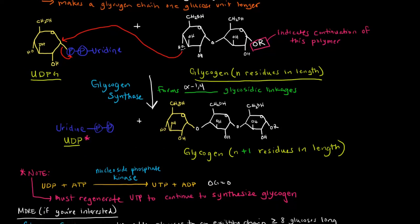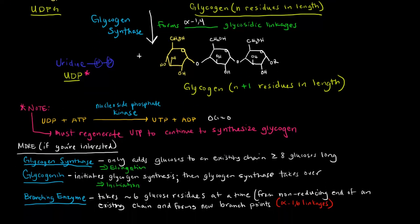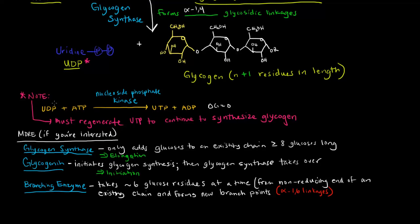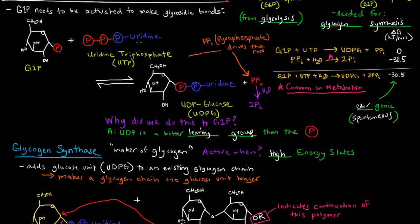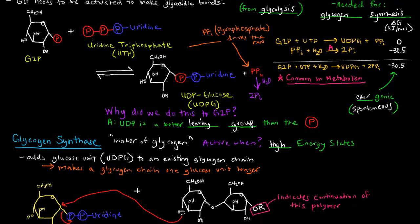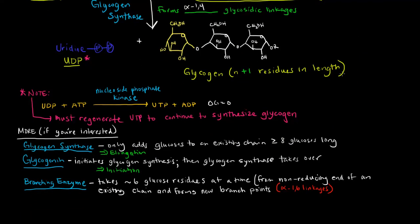Now, as a brief mention, what happens is once we have this UDP, if we want this reaction to continue, if we want glycogen synthase to actually do this again, catalyze this reaction again, then what we need is we need to activate another glucose 1-phosphate. We need this reaction to happen again so that we can create another UDPG that we can attach to the glycogen chain. Well, in order to do that, we need another UTP. So this UDP comes together with an ATP.